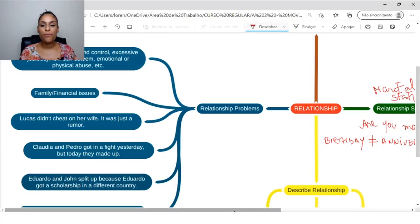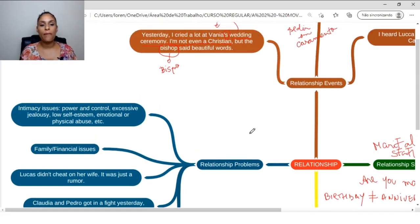So, let's move on to relationship problems. Let's see relationship problems. Who hasn't? So, let's go. First, I separated here into some situations. First situation: intimacy issues. These issues give this idea of problem. So, problems in the couple's intimacy. Power and control. If you have a very controlling person, this can be a problem. Power and control. We have excessive jealousy. Excessive jealousy. We can have low self-esteem. Low self-esteem. So, low self-esteem. We can have emotional or physical abuse. Emotional or physical abuse. So, emotional or physical abuse can be problems related to this.